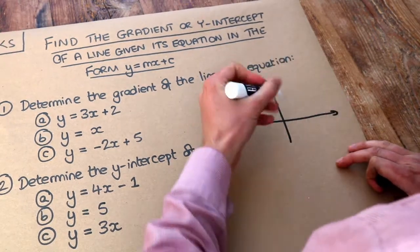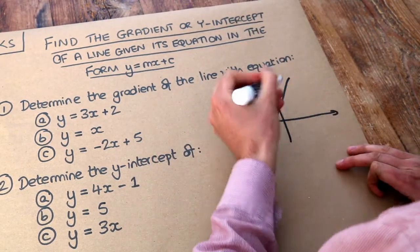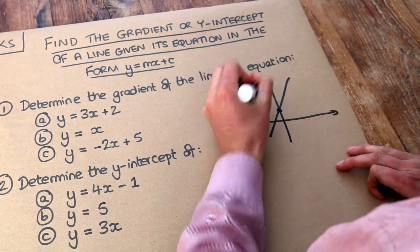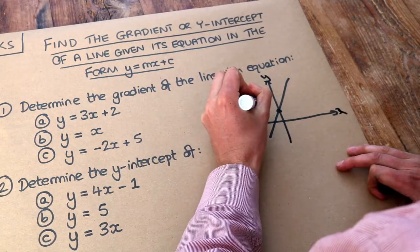If I had a sketch and I had a line like this, the y-intercept is where it cuts the y-axis. So that's the y-intercept.